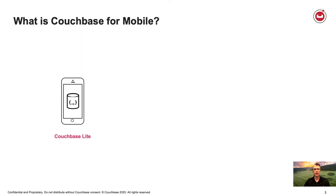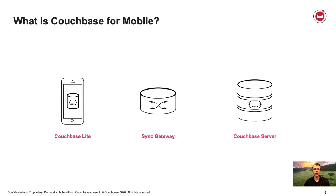Typically phones and tablets are pretty common. The second piece of Couchbase for mobile is Sync Gateway. This is what provides the secure transfer or synchronization of data between the edge where Couchbase Lite is running and the cloud where Couchbase Server is running.